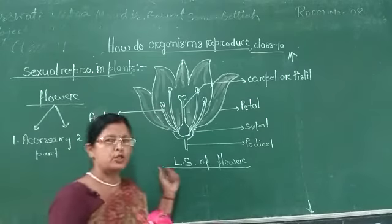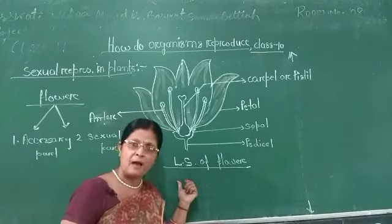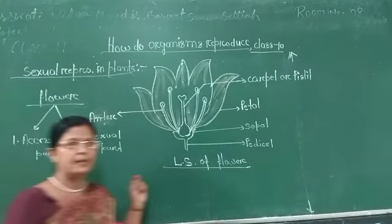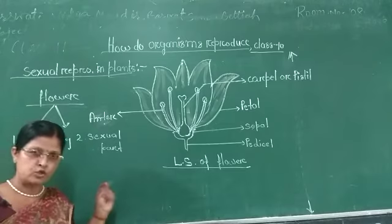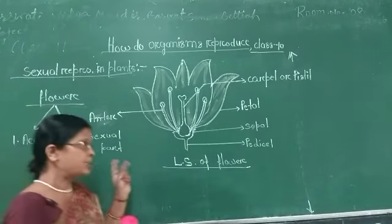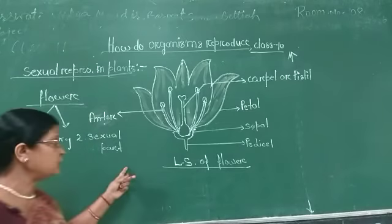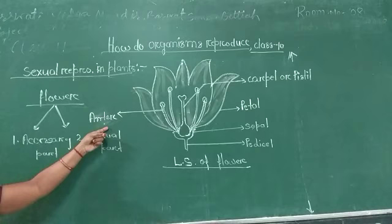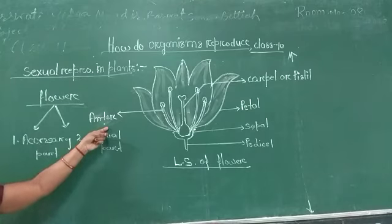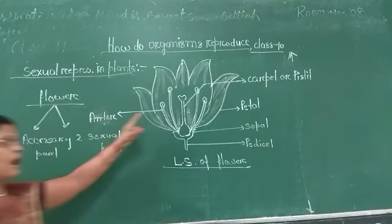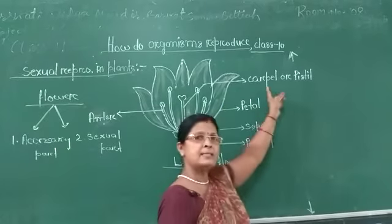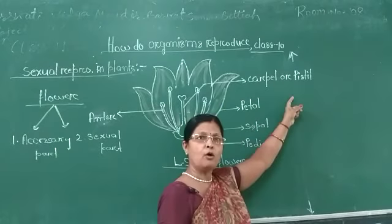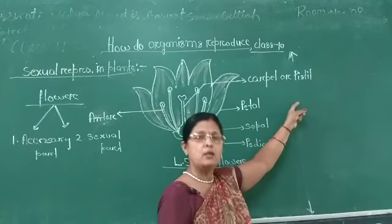Now we see the sexual parts of the flower. The anther is the male sexual part of the flower, while the carpel or pistil is the female sex organ of the flower.